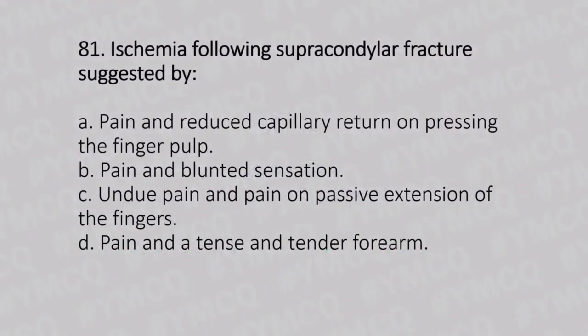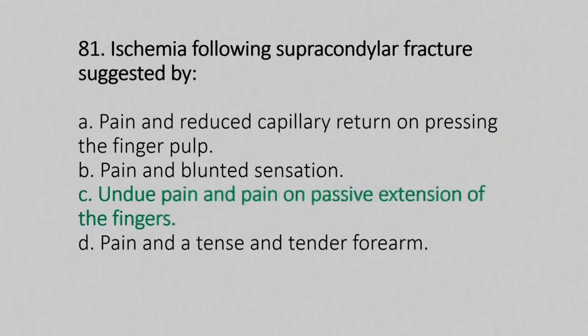Question number 81. Ischemia following supracondylar fracture is suggested by. Option A: pain and reduced capillary return on pressing the finger pulp. Option B: pain and blurred sensation. Option C: undue pain and pain on passive extension of the fingers. Option D: pain and a tense and tender forearm. And the answer is Option C, undue pain and pain on passive extension of the fingers.